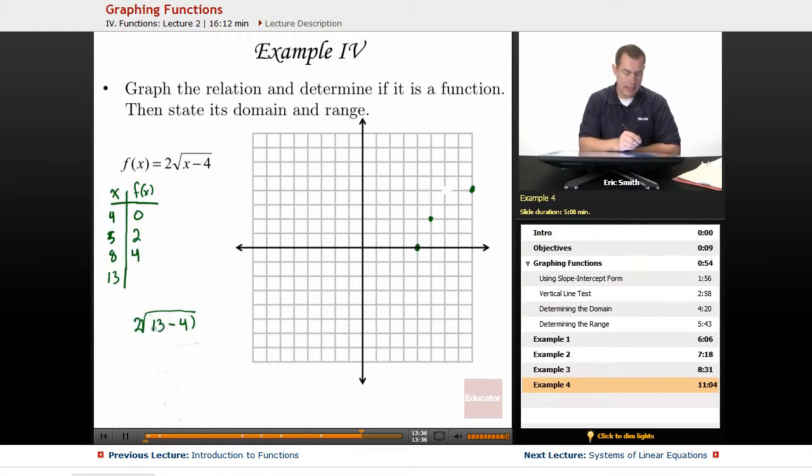13 minus 4 would be a 9. So 2 times the square root of 9, 2 times 3, or 6. So that's another point on our graph. So looking at our points, I might as well start putting them together. Looks like I have a nice little curve right here.